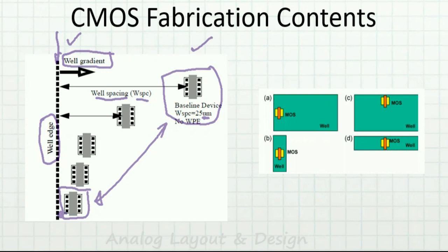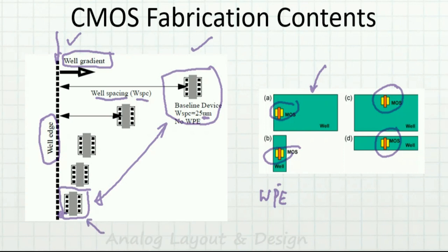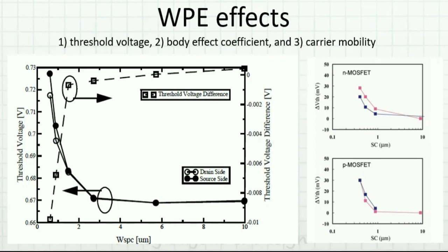We saw that at the edges the doping density is higher, whereas in the center the doping density is normal. In this N-well diagram, one transistor sits very close to the edge, another is away from the edge, and one transistor has the edge on both sides. Proximity means very close to the well edge — whenever transistors are very close to the well edge, they experience the well proximity effect.